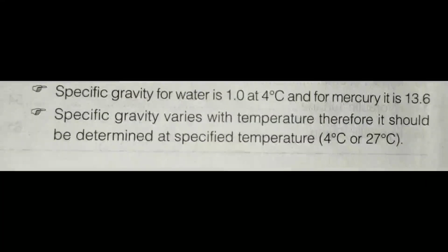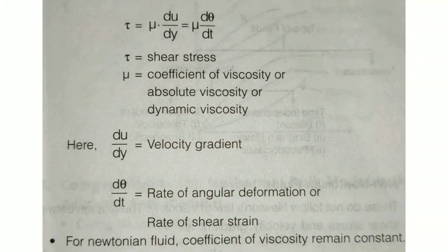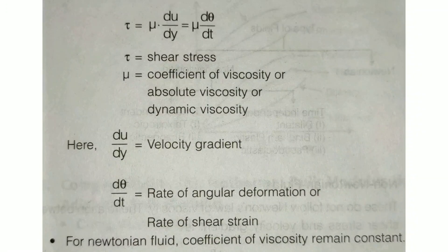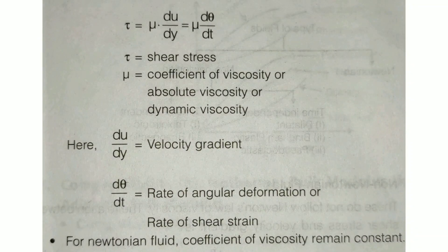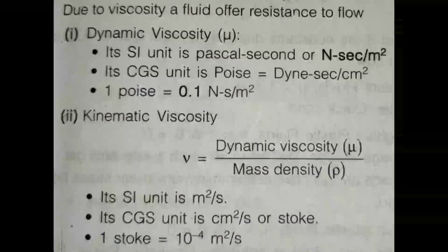Newton's law of viscosity is a very important topic in fluid mechanics. It states that tau equals mu times du/dy, which also equals mu times d-theta/dt. Here, mu is the coefficient of viscosity, also called absolute viscosity or dynamic viscosity. du/dy is the velocity gradient, and d-theta/dt is the rate of angular deformation or rate of shear strain. For a Newtonian fluid, the coefficient of viscosity remains constant.